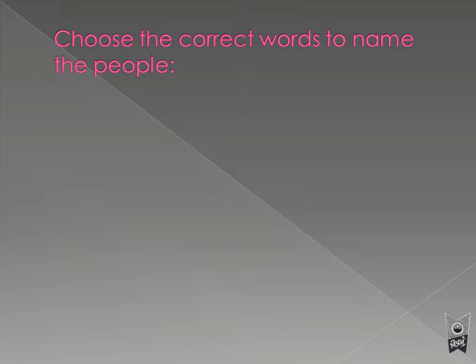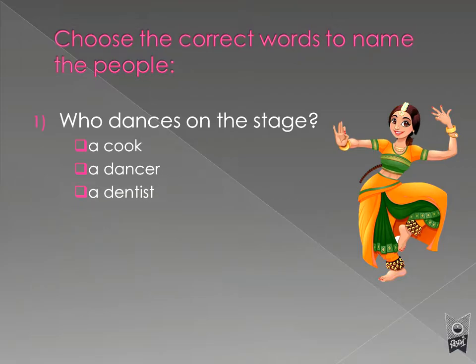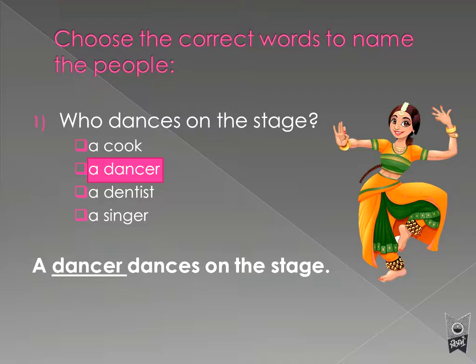Now you have to choose the correct words to name these people. Look here — who dances on the stage? Can you see this lady? She is called a cook, a dancer, a dentist or a singer. Yes, a dancer. So the right answer is a dancer. A dancer dances on the stage. Here 'dancer' is the naming word.